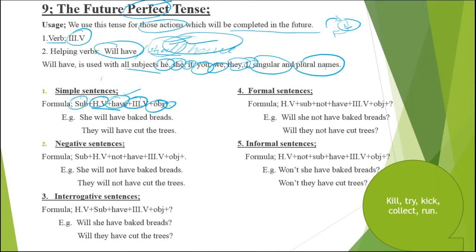Next we have negative sentences — those in which we deny, reject, or refuse the statement. Formula: subject + will + not + have + third form of verb + object + full stop. Note that 'not' comes between 'will' and 'have.' For example: 'She will not have baked breads,' 'They will not have cut the trees.' Next we have interrogative sentences — those in which we ask questions. Formula: will + subject + have + third form of verb + object + question mark. For example: 'Will she have baked breads?' 'Will they have cut the trees?'